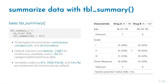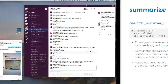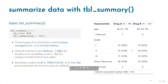The function takes every column in your dataset and adds it to the summary table. You can see three types of variables here: a continuous variable (age), a categorical variable (grade), and a dichotomous variable (tumor response).